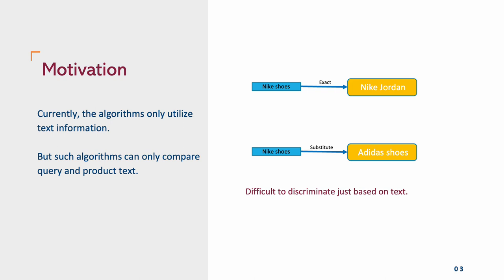Current algorithms rely on the text of query and products to define the relation between them. However, as we can see from the example given here, this is not always simple. In this case, Nike Jordan and Adidas shoes both share a common token with their query. So it is difficult for a text only algorithm to learn which word defines if the relation between them should be exact or substitute.